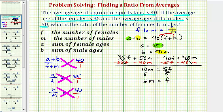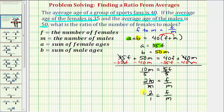Now again, we're looking for the ratio of f to m, so now we'll divide both sides by m. On the right, m over m simplifies to 1, so this is equal to 2. But as a ratio it would be 2 to 1 equals f to m. So now we know the ratio of females to males is 2 to 1, which means for every two females there's exactly one male, or there are twice as many females as there are males in this sports group.